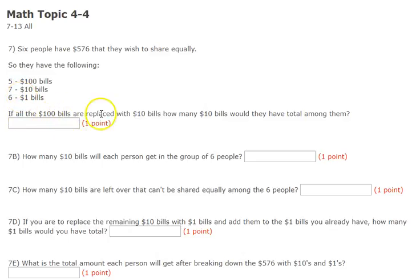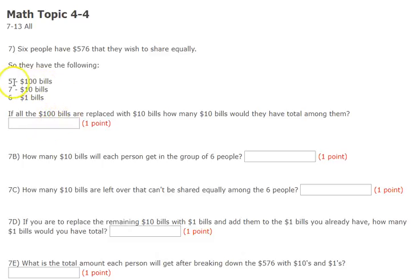If all the $100 bills are replaced with $10 bills, how many $10 bills would they have total among them? So they went to the bank with those five $100 bills and said, I want $10 bills in return. Now with those $100 bills gone, how many $10 bills do they have in their pocket? They still have $576 — how many $10 bills do they have total, including everything?